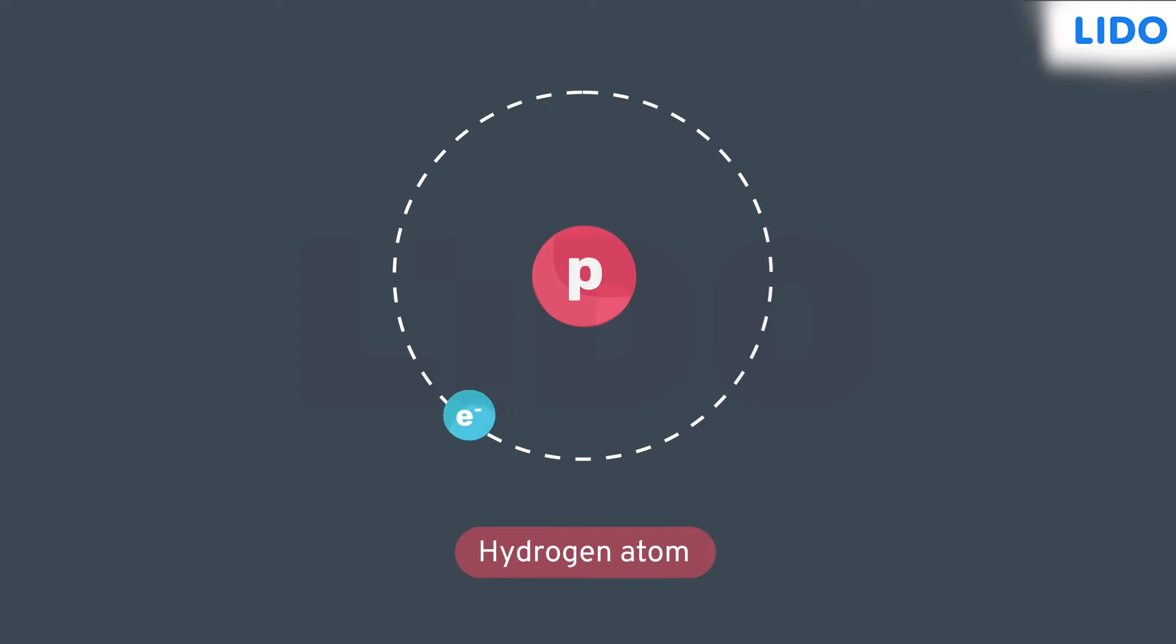It is the simplest atom with only one proton in the nucleus and only one electron in its orbit. It is the only element that does not have any neutrons.